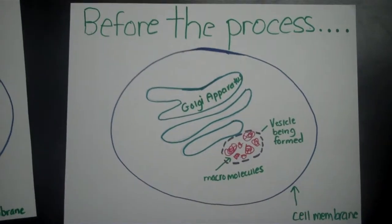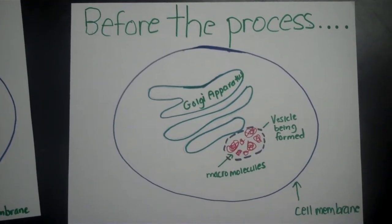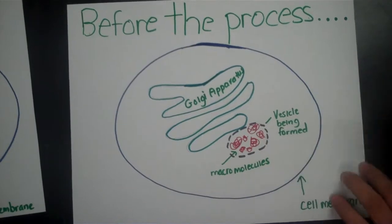Before the process, ATP energy is required to form the vesicle around the macromolecules.